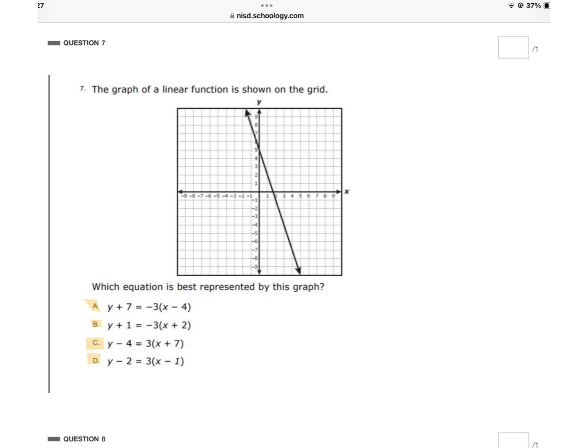I notice every single one of these answer choices is written in point-slope form. So I'm going to go back to my star chart. I'm not going to try to remember this. Point-slope form, according to my star chart, is that y minus y1 equals m times x minus x1.